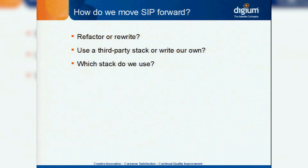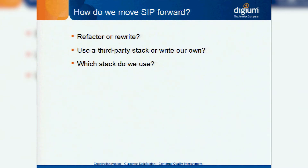We looked at what we had SIP-wise and what we needed to be able to do — most of which was architecturally related. We had to decide: do we just refactor chan_sip and keep it the way it is, or do we need to rewrite a new channel driver from scratch? Pretty much every time we looked into the risks involved with refactoring chan_sip, we concluded it was actually a much smarter idea to just rewrite a brand new channel driver. Once we decided that, we could use one of the many nice third-party SIP stacks out there, or try the same folly again and write our own. We very quickly decided that using a third-party stack was a much, much better idea.